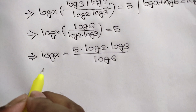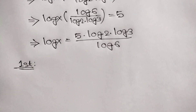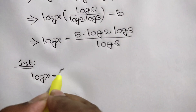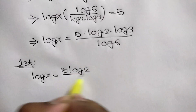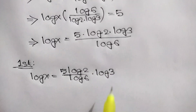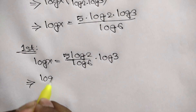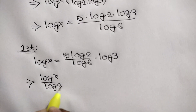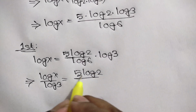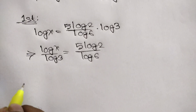Now there are two ways to solve this. In the first way, we can write log of x is equal to 5 times log of 2 over log of 6 times log of 3. Taking log of 3 to the left side, we get log of x over log of 3 is equal to 5 times log of 2 over log of 6.